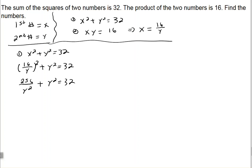We cannot leave that y squared in our denominator. So we need to multiply both sides of the equation by y squared to clear that y squared out of our denominator.